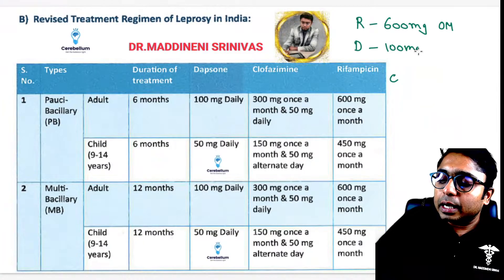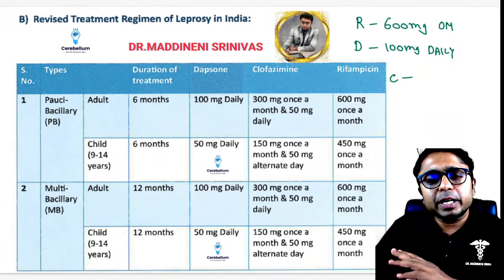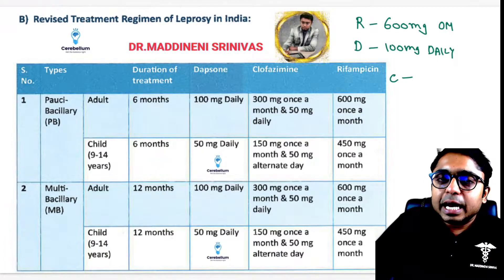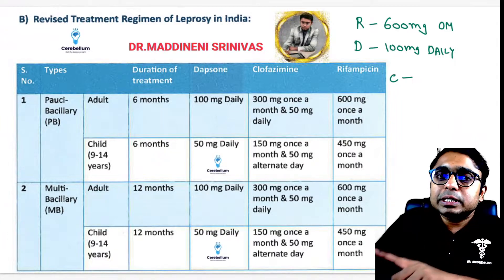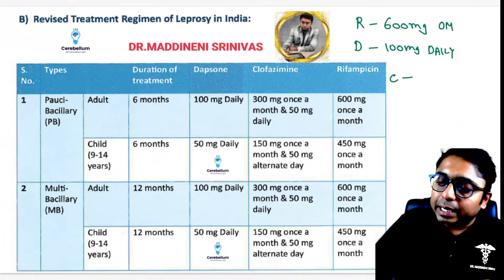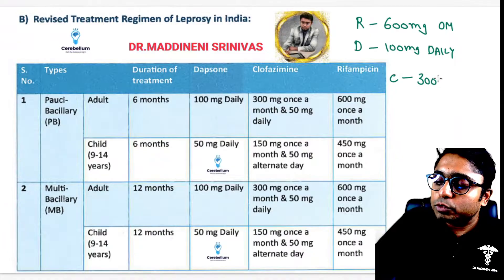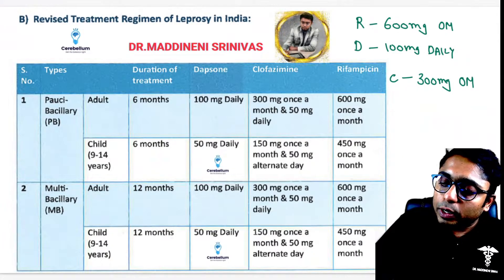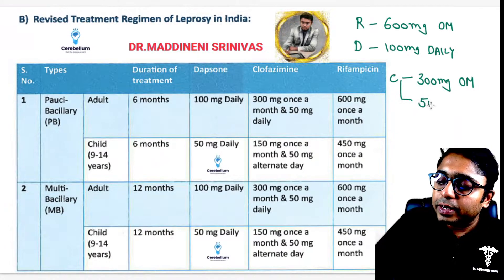If you remember the Rifampicin and Dapsone doses, Clofazamine becomes easy — it is half of each. Half of Rifampicin (600 mg) gives 300 mg once a month for Clofazamine, and half of Dapsone (100 mg) gives 50 mg daily for Clofazamine.